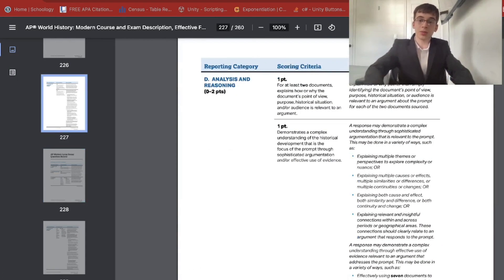For LEQ, there are not that many changes, but there's another description in terms of how to earn that complexity point. For analysis and reasoning, those two points are more detailed, as is DBQ. And this takes place, this is for AP World History and AP US History, and this is taking place currently in 2023 to 2024 year. This may or may not change for the 24 to 25 year.